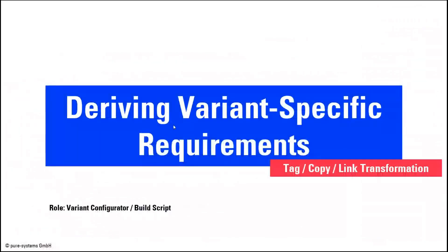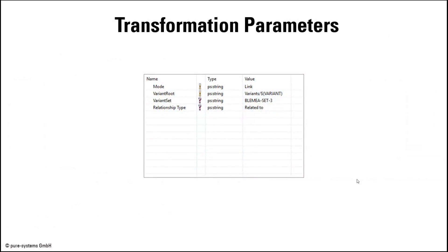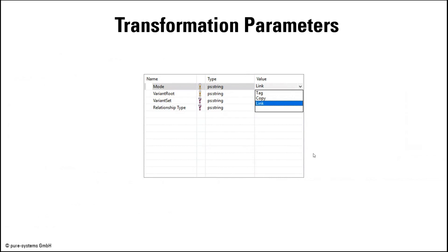Based on our feature selection for a variant stored in a variant description model, you can generate a variant-specific JAMA project out of your 150% JAMA project by using a transformation step. Before triggering a transformation, there are several parameters for configuring it. I will introduce the three different transformation modes. If a JAMA item is part of a variant, using tag transformation, the item can be tagged with the name of the variant. Using copy transformation, a copy of the item can be stored in a dedicated area on the JAMA server. And using link transformation, a link can be created to an item within a provided set of items. In the coming slides, we will see how to trigger all three types of transformations and see the results directly in JAMA.